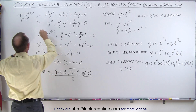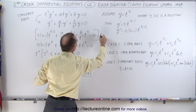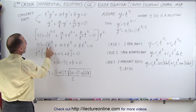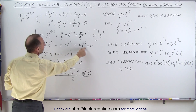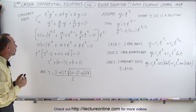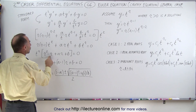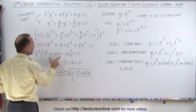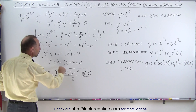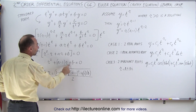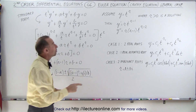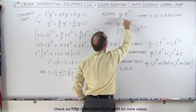If we multiply both sides by t squared, we end up with a form where all three terms on the left side contain a factor of t to the r. We can factor that out, leaving us with r squared minus r plus a times r plus b. Collecting common terms gives us a quadratic equation in r — with r squared, r to the first power, and r to the zero power — which we can solve for r, the exponent in the general form of the solution.